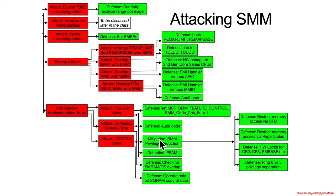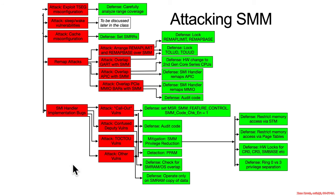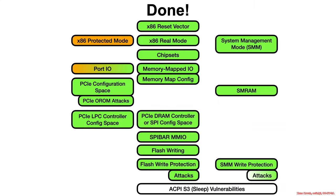Those were the TOCTOU vulnerabilities. Standard defensive mechanisms would apply — if an attacker breaks into SMM, you want them to be as restricted as possible. The defense is to not double fetch. There can be other vulnerabilities generically, so this is the end of our threat tree for now — other vulnerabilities as a general catch-all. There are other types of vulnerabilities, and you have to read the research to find them. With that, we have covered all of the attacks in this class, and it looks like we just have sleep vulnerabilities left.